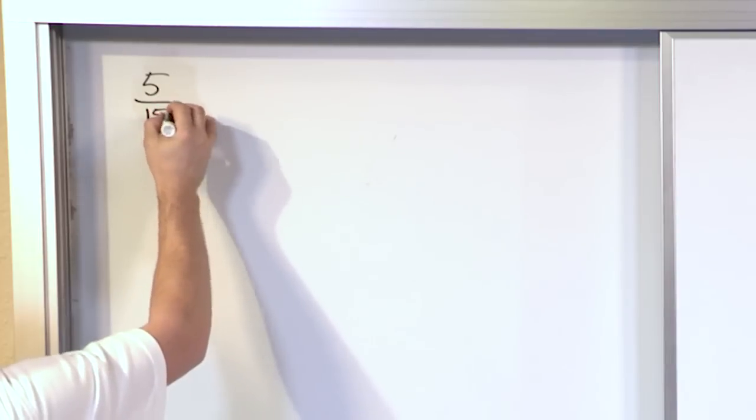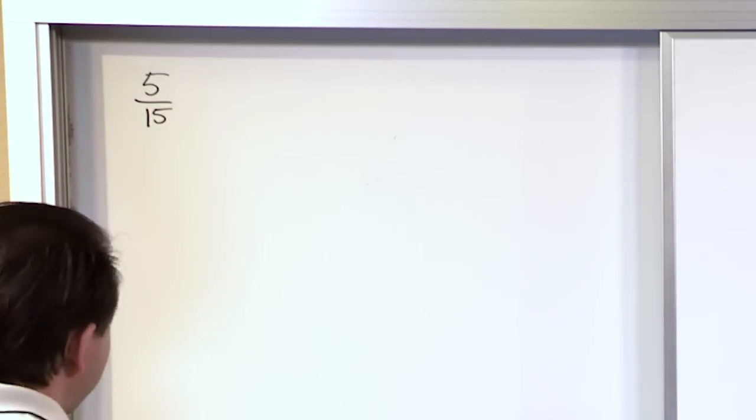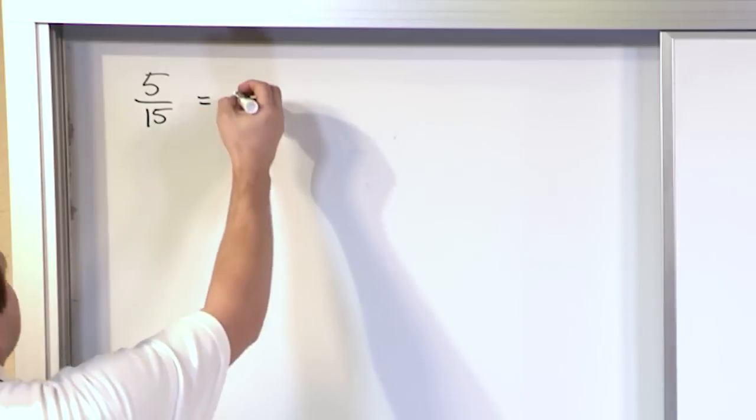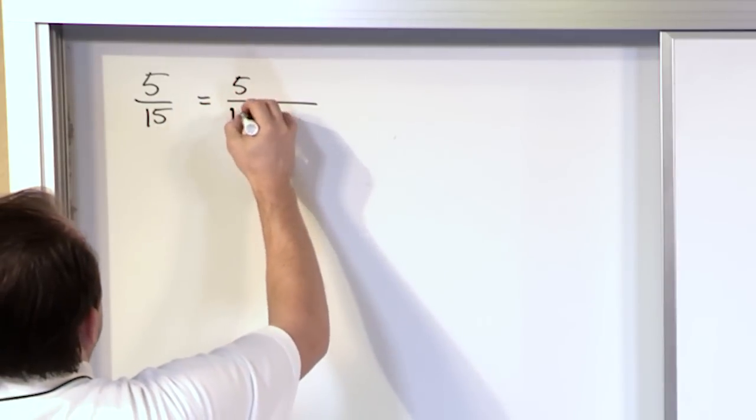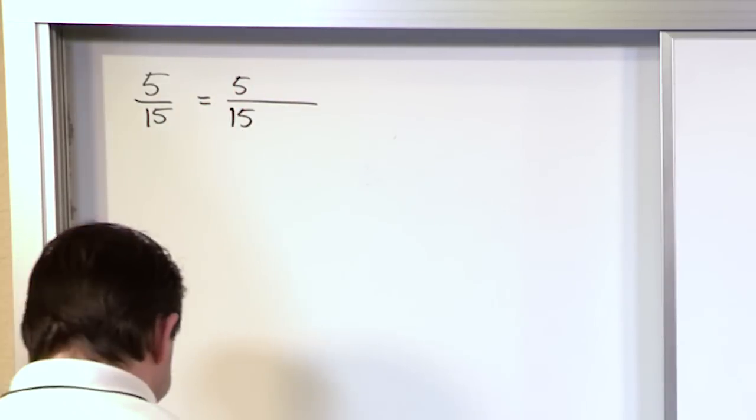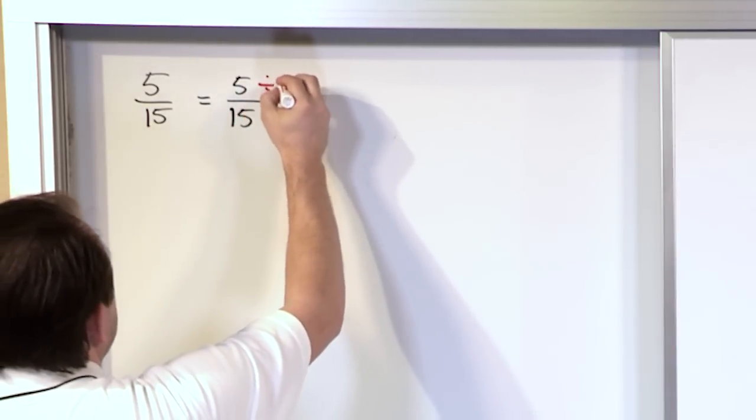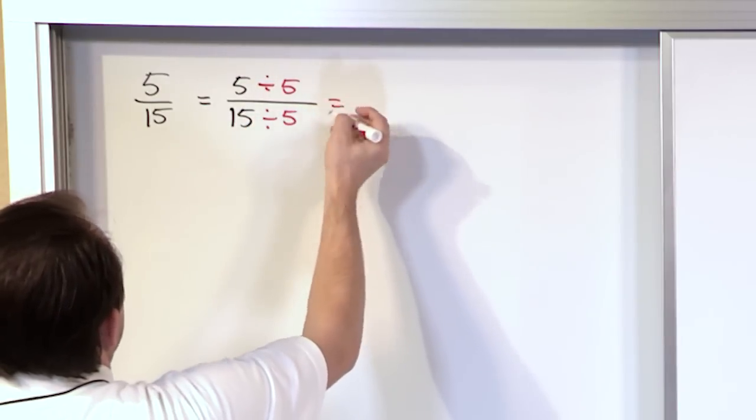5 fifteenths. How do we simplify? First of all, is this a simplified fraction? It's not because I can look at it and see I can divide the top and the bottom by something to make this simpler. In this case I know I can divide the top by 5 and I can also divide the bottom by 5.